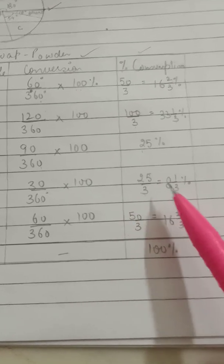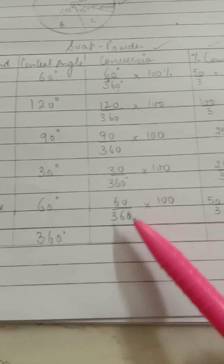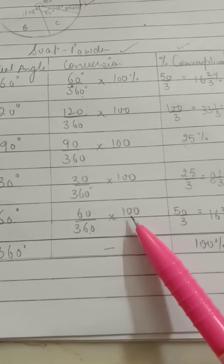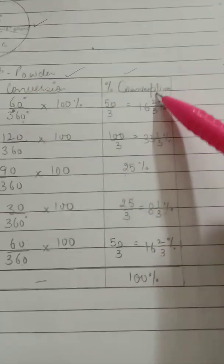90 upon 360 into 100, that's 25 percent. 30 upon 360 into 100, that's 25 upon 3, change it to mixed: 8⅓ percent. The last one, which is others: 60 upon 360 degrees multiplied by 100 percent, that is 50 upon 3, which comes as 16⅔ percent. When you add all this, it comes as 100 percent.